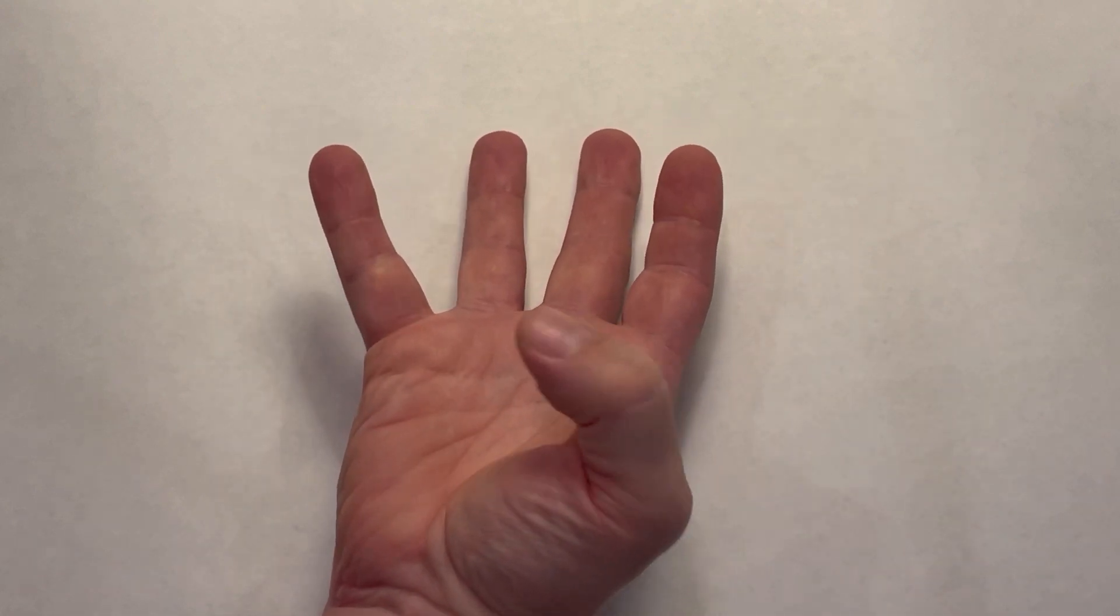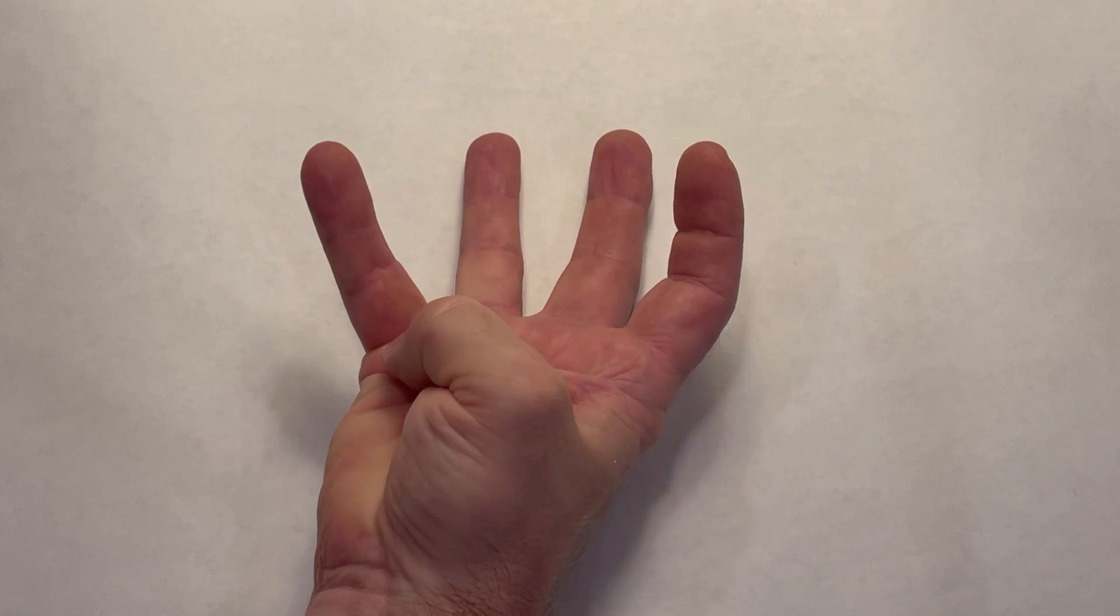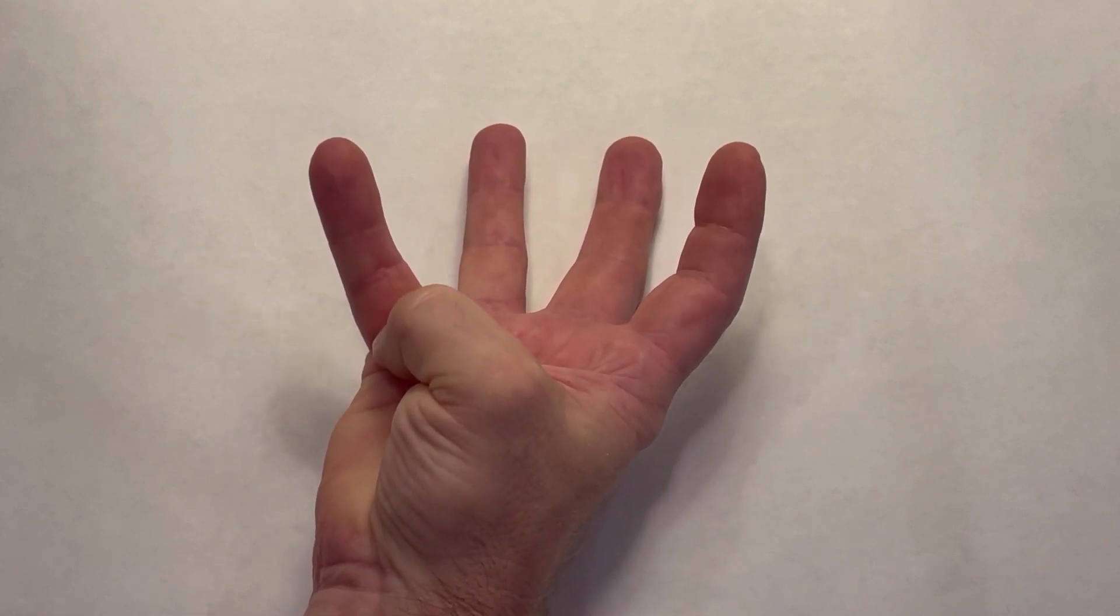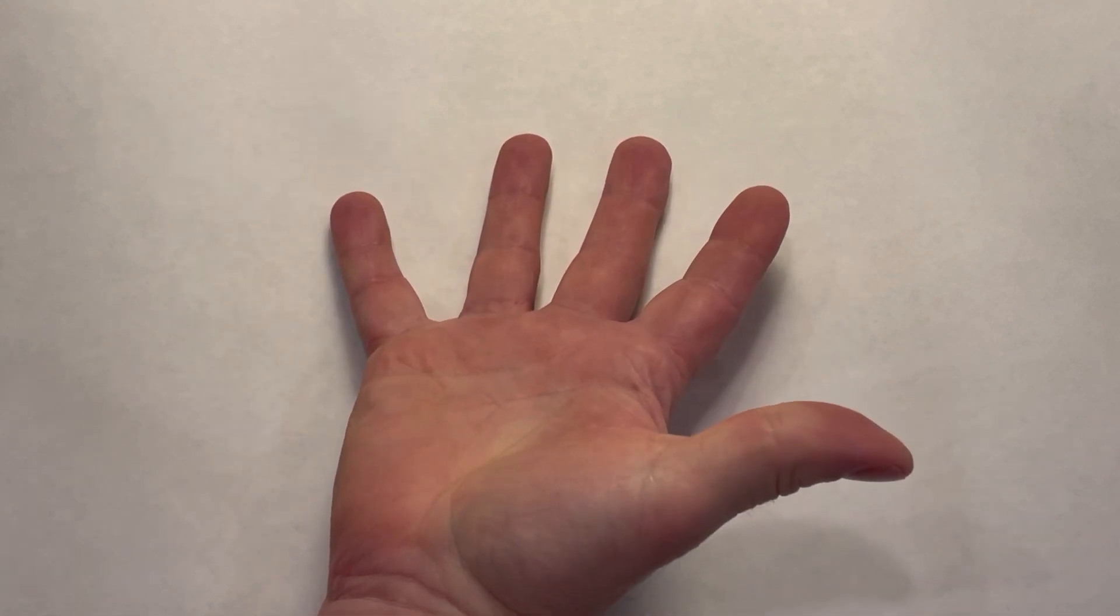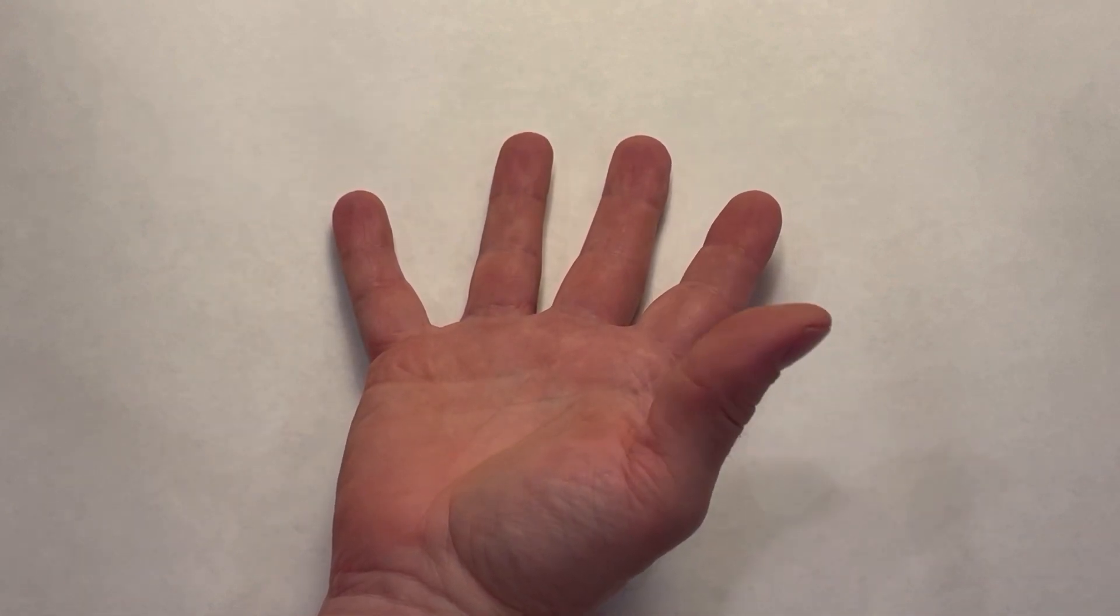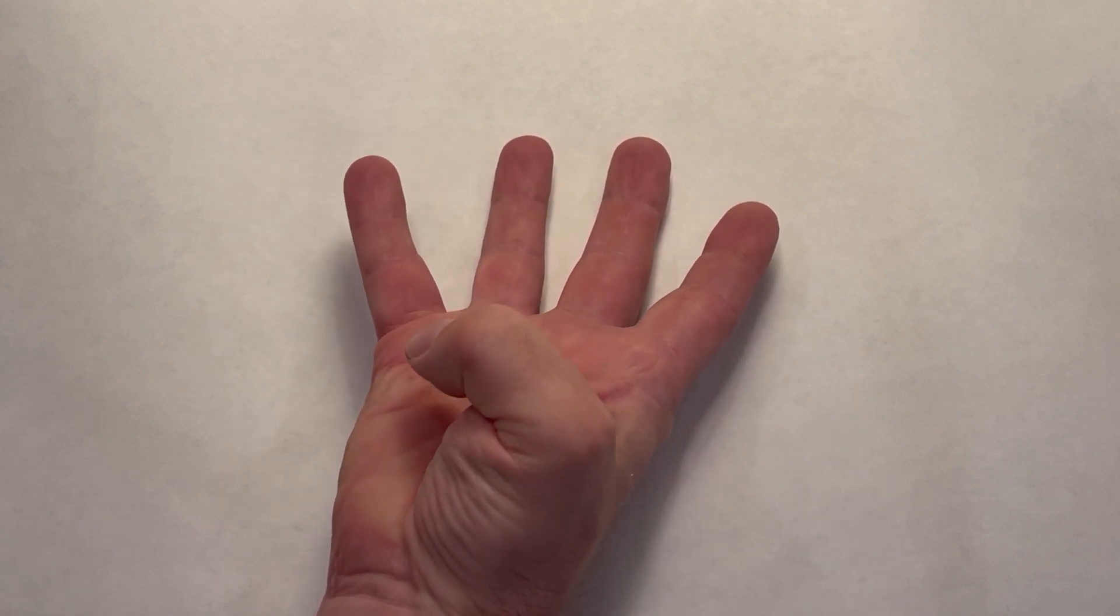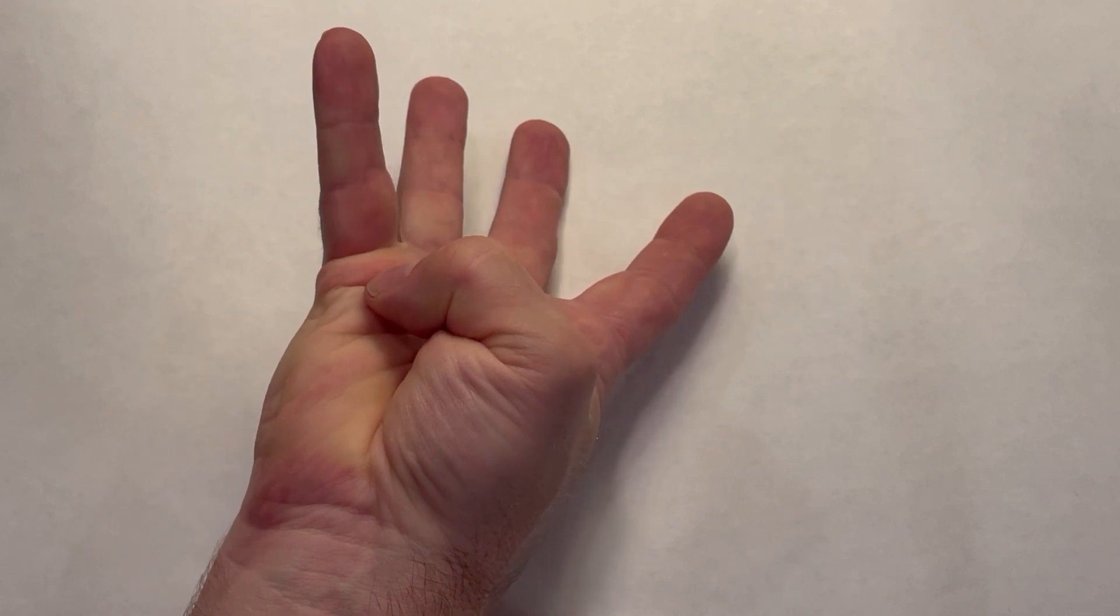Stage 9 is the thumb to the palmar digital crease of the small finger. And stage 10 is the thumb tip to the distal palmar crease over the 5th metacarpal. Like that.